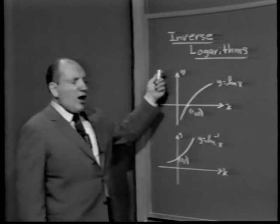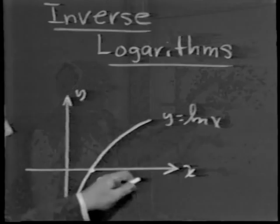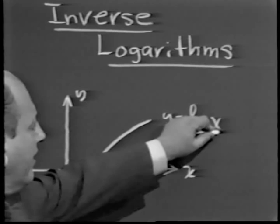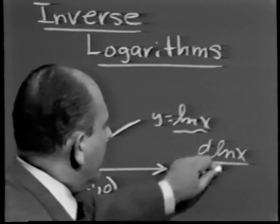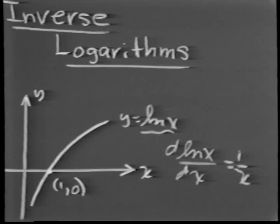To see what's coming up here, simply recall that last time we invented, so to speak, a new function called the natural log of x. This had nothing to do with exponents. It was the function whose derivative with respect to x was 1 over x, and passed through the point (1, 0). That uniquely defined this particular function.